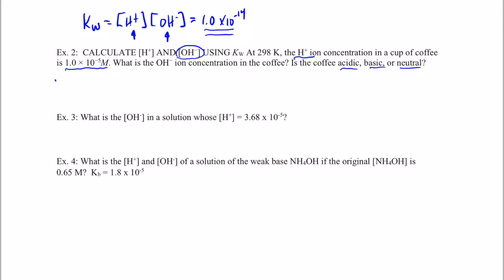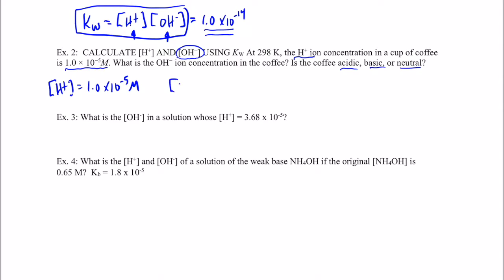We know the hydrogen ion concentration in our cup of coffee is 1.0 times 10 to the negative 5th moles per liter. Using this equation, we can solve for the hydroxide ion concentration. That would be equal to Kw over the hydrogen ion concentration. We know those two numbers: Kw is 1.0 times 10 to the negative 14th — remember that — and the hydrogen ion concentration was given as 1.0 times 10 to the negative 5th.